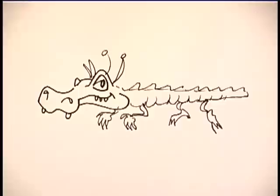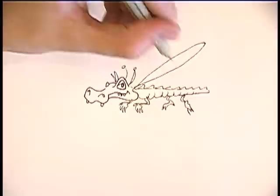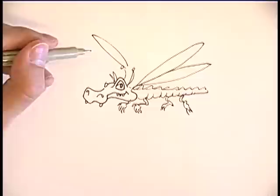And then obviously to make him a dragonfly, he's going to be needing a couple sets of wings. Four wings total. Coming out of his back just like that.